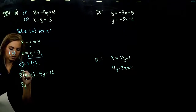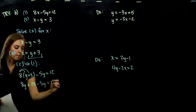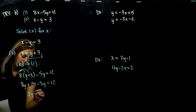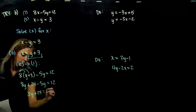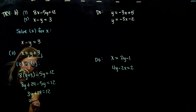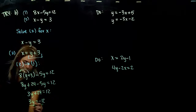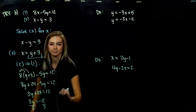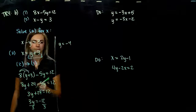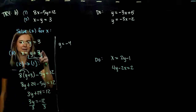Substituting into equation 1 and distributing: 8 times y gives 8y, and 8 times 3 is 24. Combining like terms on the left side: we've got 3y's altogether. We need to get those y's alone, so subtract 24 from both sides: 3y equals negative 12. Dividing gives y equals negative 4.